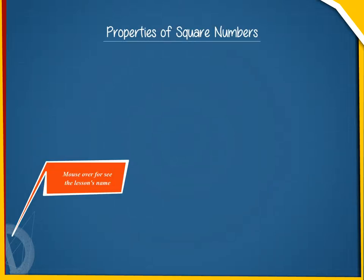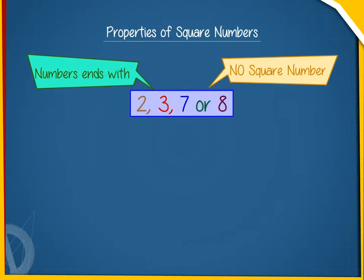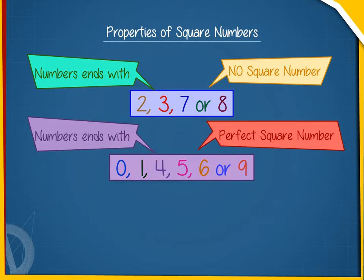Properties of Square Numbers. Property 1: No square number ends with 2, 3, 7 or 8. A perfect square always ends with 0, 1, 4, 5, 6 or 9.